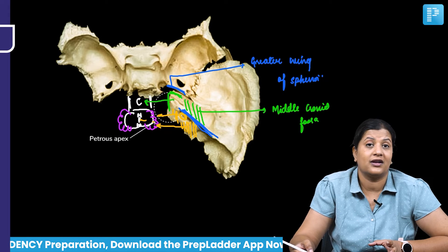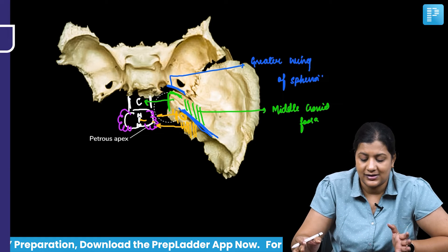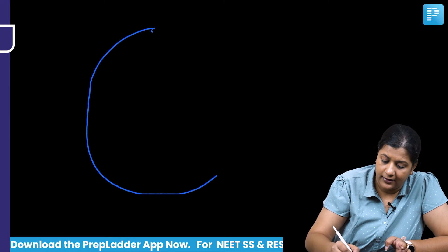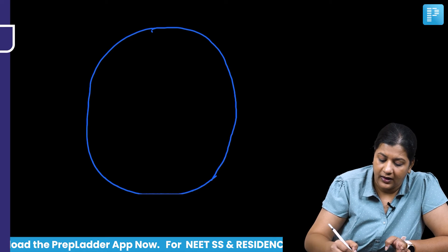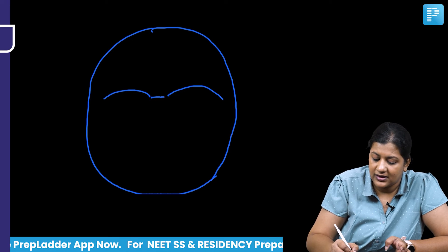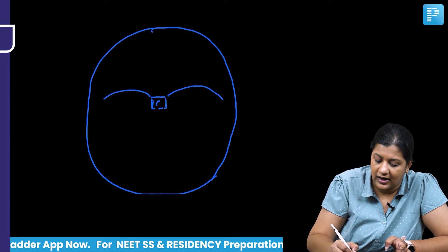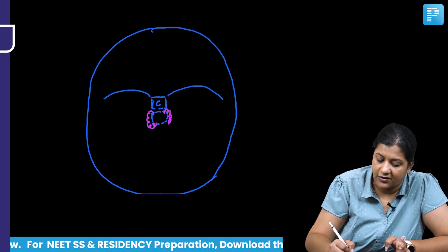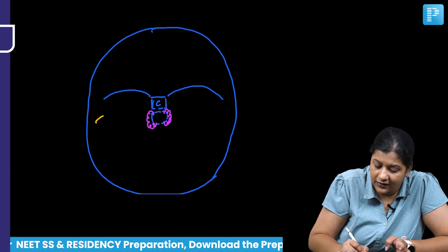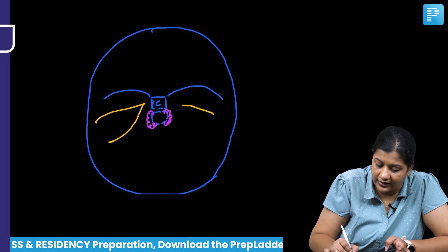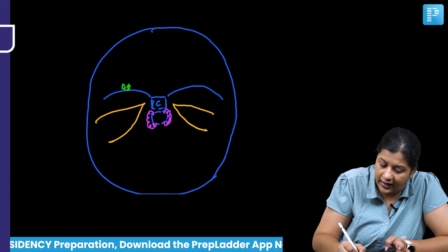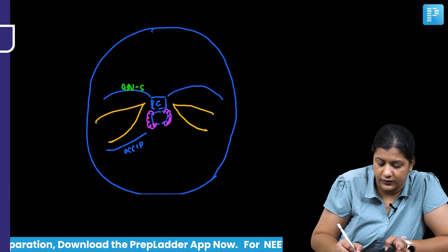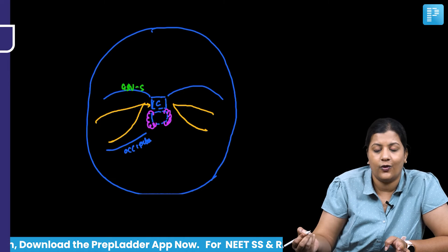To draw a line diagram of the petrous bone from a decapitated skull view: anteriorly you see the greater wing of the sphenoid; medial and inferior to it is the clivus; below that is the brainstem with midbrain, pons, and medulla covered by the cerebellum. The petrous part of the temporal bone is sandwiched between the greater wing of the sphenoid anteriorly and the occipital bone posteriorly.